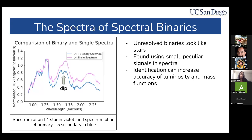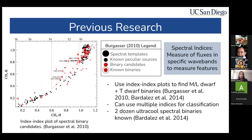Since they look like single stars, we can only notice small peculiar signals in the spectra of these binaries to separate them, and the identification of these can increase the accuracy of luminosity and mass functions. If you take a look at the graph, you'll see flux plotted with wavelength — the single star is plotted in violet while the binary is blue. There's a slight dip in the spectra, and the binary is overall bluer than the single.